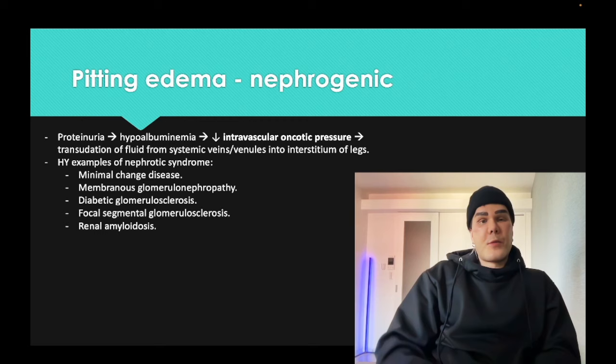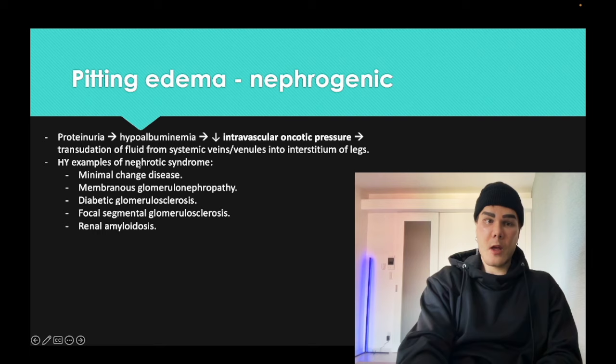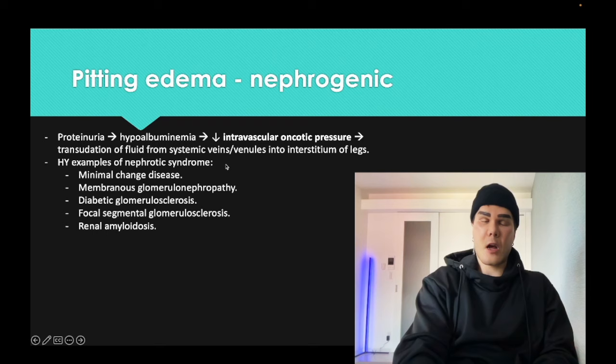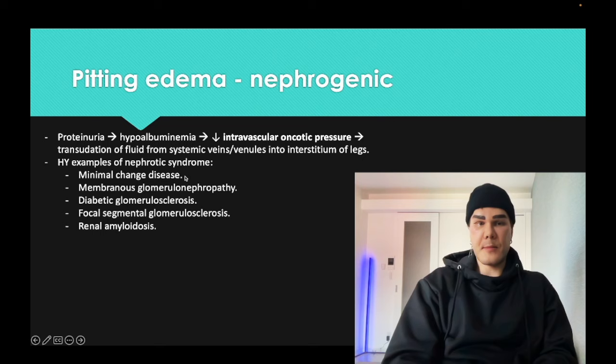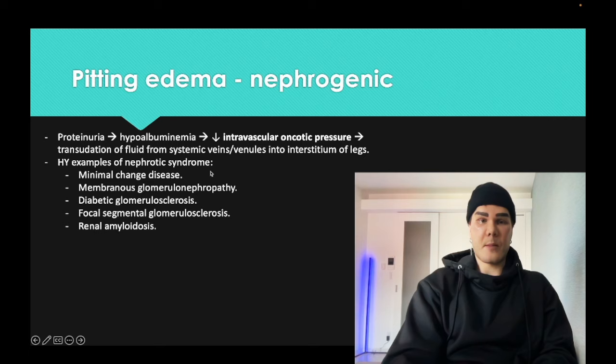In nephrotic syndrome, you're generally losing over three grams of protein in the urine per day. Minimal change disease is probably pediatric 14 out of 15 times — it's just going to be a viral infection, and then the kid has peripheral edema, periorbital edema, and ascites. About 50% of the time they won't even mention the viral infection, so just know that an eight-year-old with peripheral and periorbital edema is minimal change disease. No changes on light microscopy, but on electron microscopy you see effacement of the podocytic processes. One out of 15 times it can be Hodgkin lymphoma in adults.